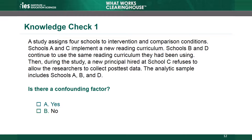The correct answer is A, yes. There is an N=1 confounding factor because there is only one intervention school in the analytic sample. The study started with four schools, but after School C dropped out, the study was left with three schools, including only one school in the intervention group, School A.